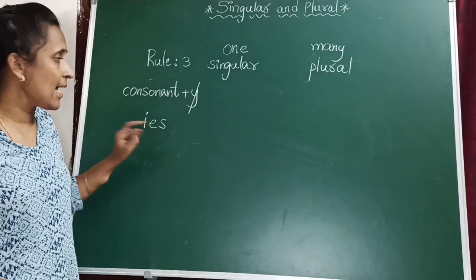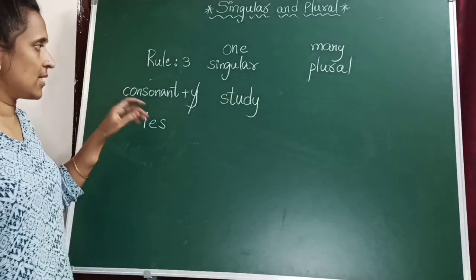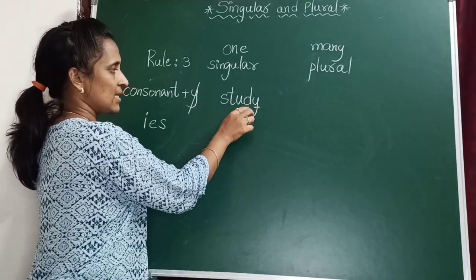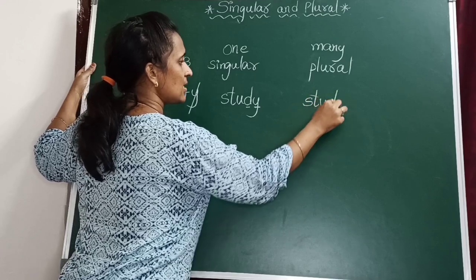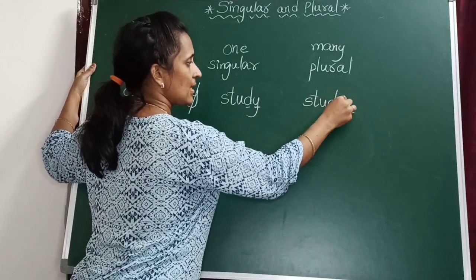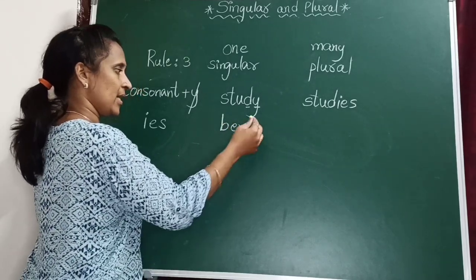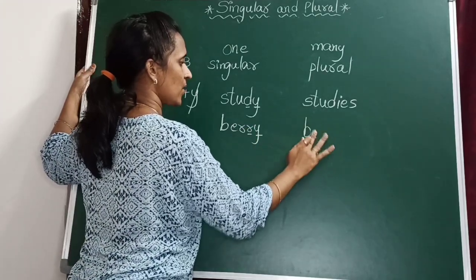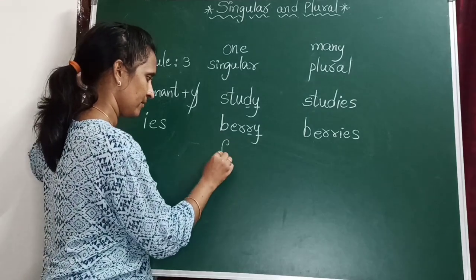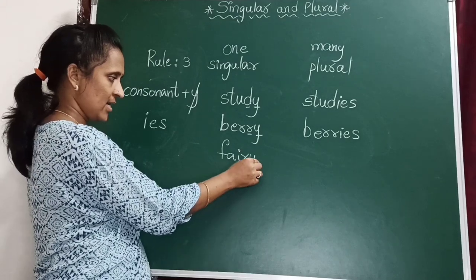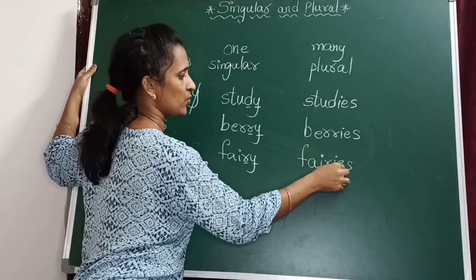What we have to add is I, E, S. For example, study — S, T, U, D, Y. This noun is ended with Y, and before Y we have D, which is a consonant. So in the plural form: drop the Y, and the Y changes to IES — studies. Berry — Y, and before Y we have a consonant — so we add IES: berries. Fairy — Y, and before Y is a consonant — fairies. IES is added in the place of Y.